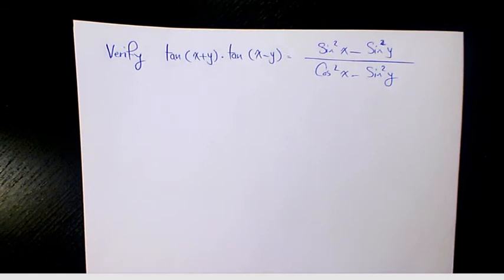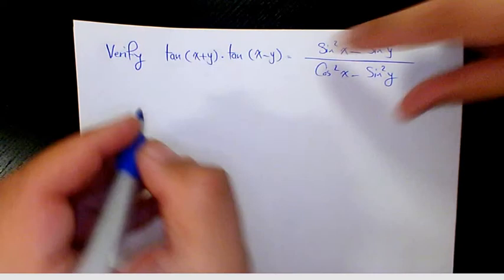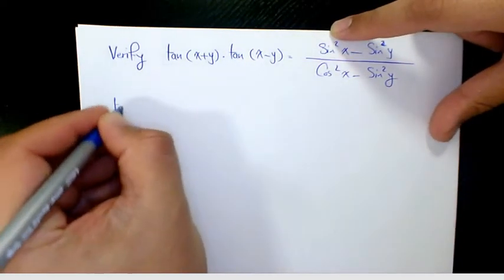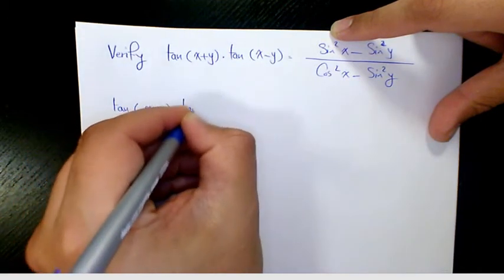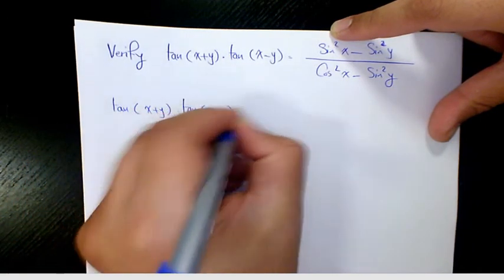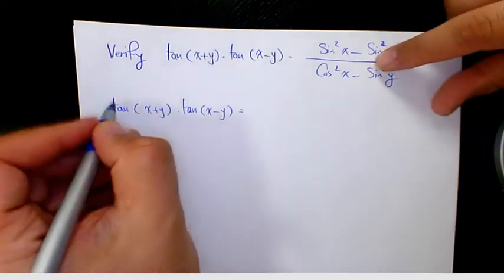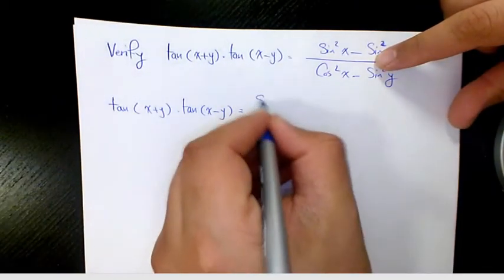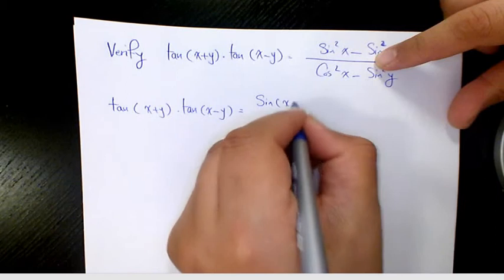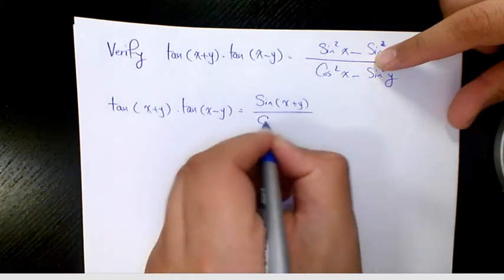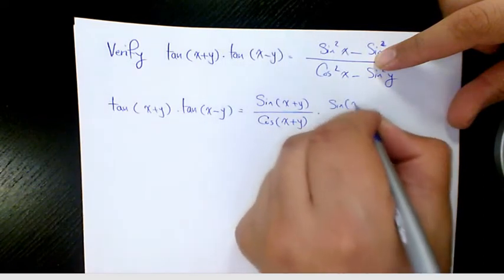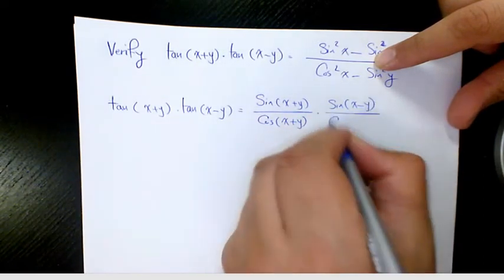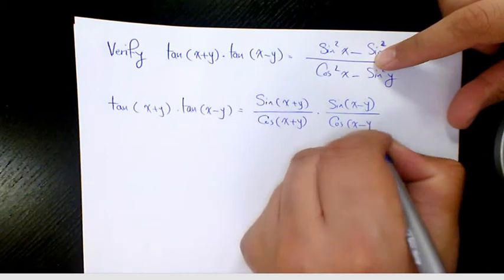Over cosine squared x minus sine squared y. The first thing I'm going to do is start from the left hand side: tan(x+y) times tan(x-y). You know tan is sine over cosine, so it's sine(x+y) over cosine(x+y) times sine(x-y) over cosine(x-y).